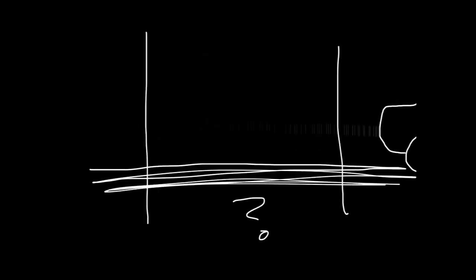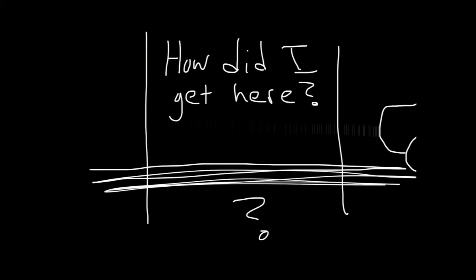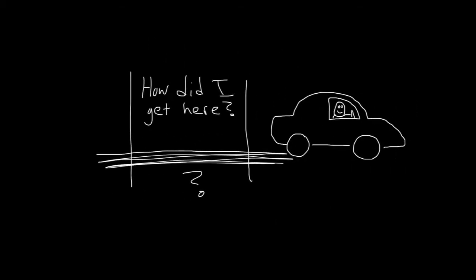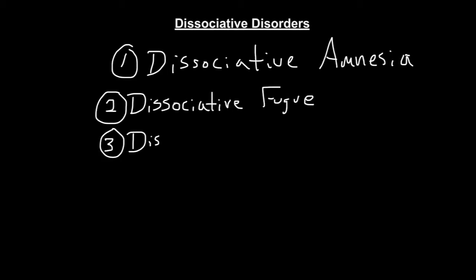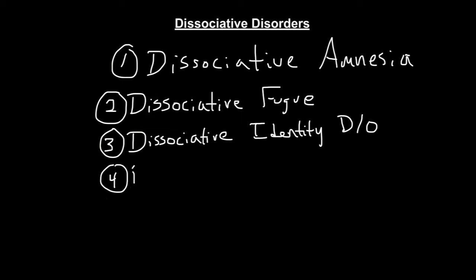Have you ever driven somewhere and once you reach your location, you've asked yourself, how did I get here? This is an example of dissociation in a mild form. Dissociative disorders include dissociative amnesia, dissociative fugue, dissociative identity disorder, and depersonalization disorder.